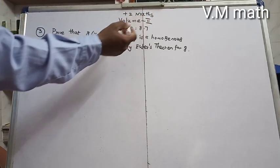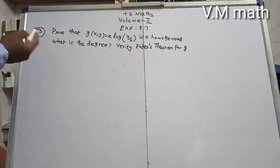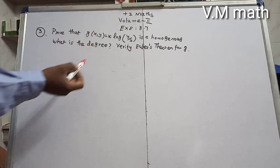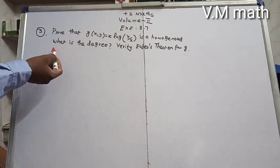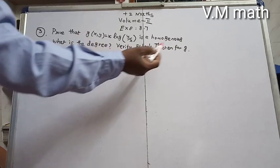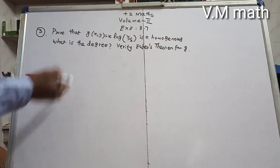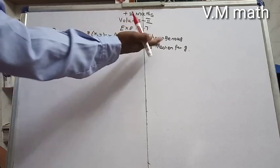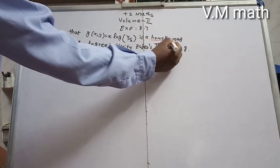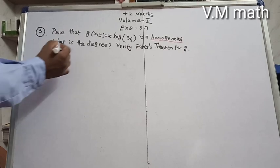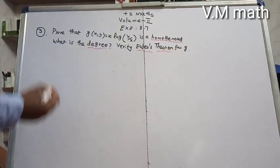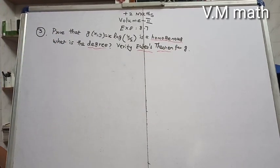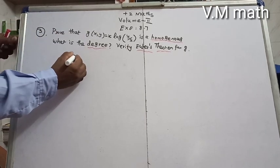Question 3: Prove that g(x, y) = x·log(y/x) is homogeneous. Find the degree. Verify Euler's theorem for g. This is a three-part question. Since g is homogeneous, we have to prove it by substitution.